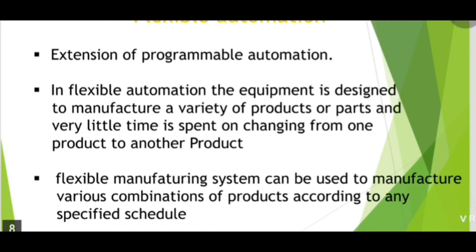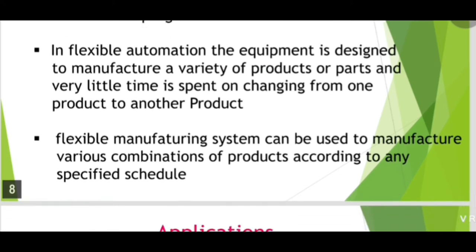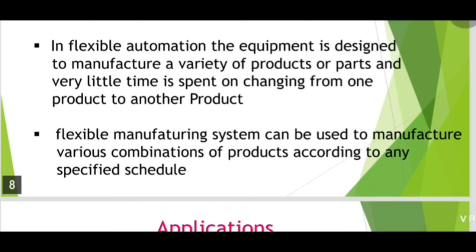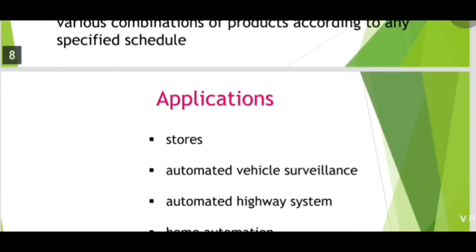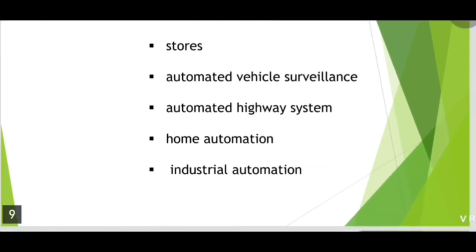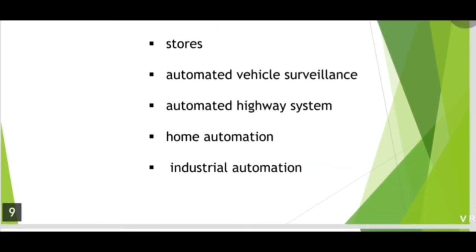Third is flexible automation, which is an extension of programmable automation. In flexible automation, each piece of equipment is designed to manufacture a variety of products or parts, and very little time is spent on changing from one product to another. Flexible manufacturing systems can be used to manufacture various combinations of products according to any specific schedule.